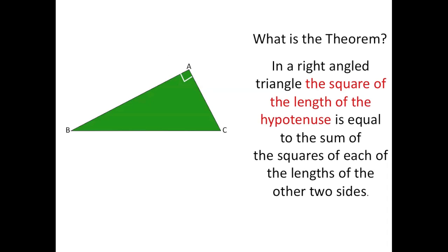Now the next part of the theorem says the square of the length of the hypotenuse. The hypotenuse is the side that is on the opposite side of the right angle. So our right angle is A, and to its opposite is line BC. So the length of BC — we have to square that. So we could write that out as BC squared.